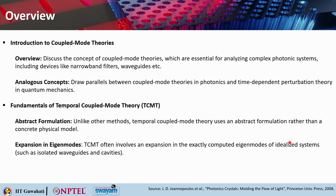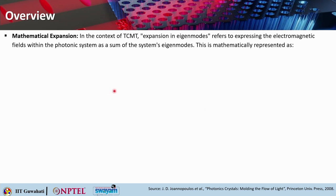The concept of expansion of eigenmodes as used in TCMT is a fundamental approach that helps in understanding and predicting the behavior of complex photonic systems. We will also look into the mathematical expansion. In the context of TCMT, the expansion in eigenmodes refers to expressing the electromagnetic fields within a photonic system as the sum of the system's eigenmodes.